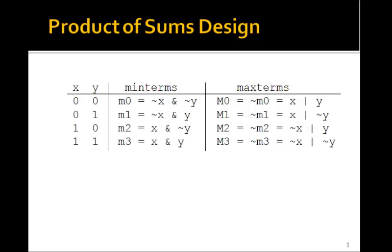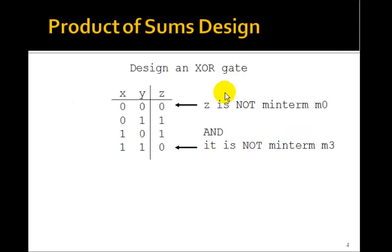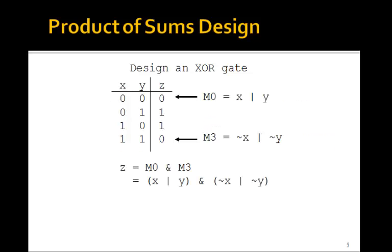Now, how do we use them? You remember when we designed our exclusive or gate using the sum of products, we looked at the 1's. For the product of sums, we look at the 0's. So here we have a 0, which means that z is not minterm M0, because it's only minterm M1 and minterm M2, and it's not minterm M3. So a 0 means that z is not minterm M0 and it's not minterm M3.